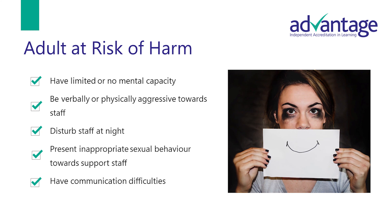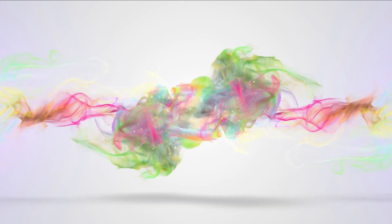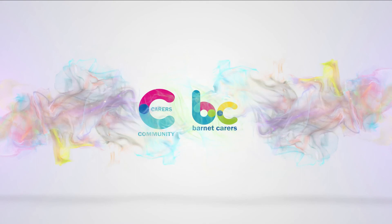Finally, adults who may be at risk of harm may be individuals who have limited or no mental capacity, who are verbally or physically aggressive towards staff, who disturb staff at night, who present inappropriate sexual behaviour towards support staff, or who have communication difficulties. Thank you for attending this brief webinar on Safeguarding Adults. This is a really complex and emotive subject and we've only covered some of the basics here. For those interested, further safeguarding training can be arranged — contact us via our website at www.barnetcarers.org.